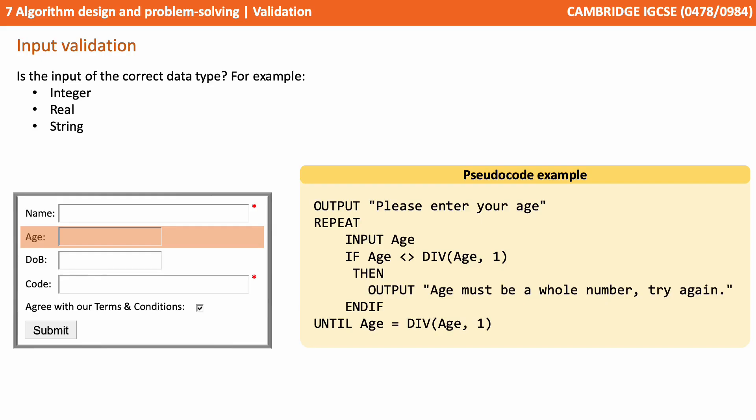Here we see where a type check could be performed on the age field. We ask the user to enter their age. They input it, and if the value is not divisible by itself with no remainder, then it can't be a whole number. This is a simple way of checking that an integer was entered.